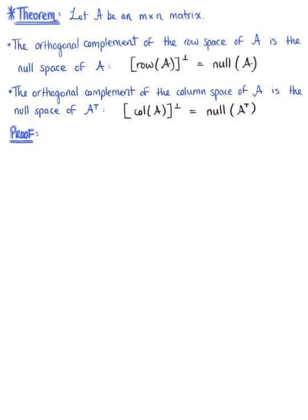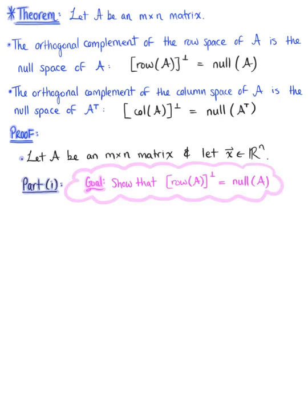Before we explore some of these fundamental relationships, let's verify that this theorem holds true. To begin, let A be an M by N matrix, and let vector X be a vector in R^N. For part one, our goal is to show that the orthogonal complement of the row space of matrix A is, in fact, equal to the null space of matrix A.